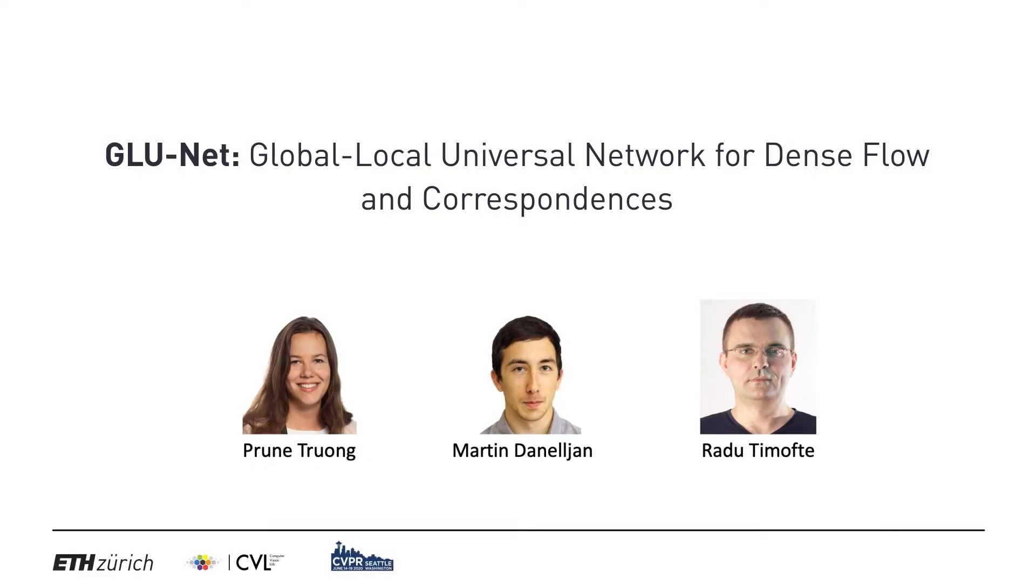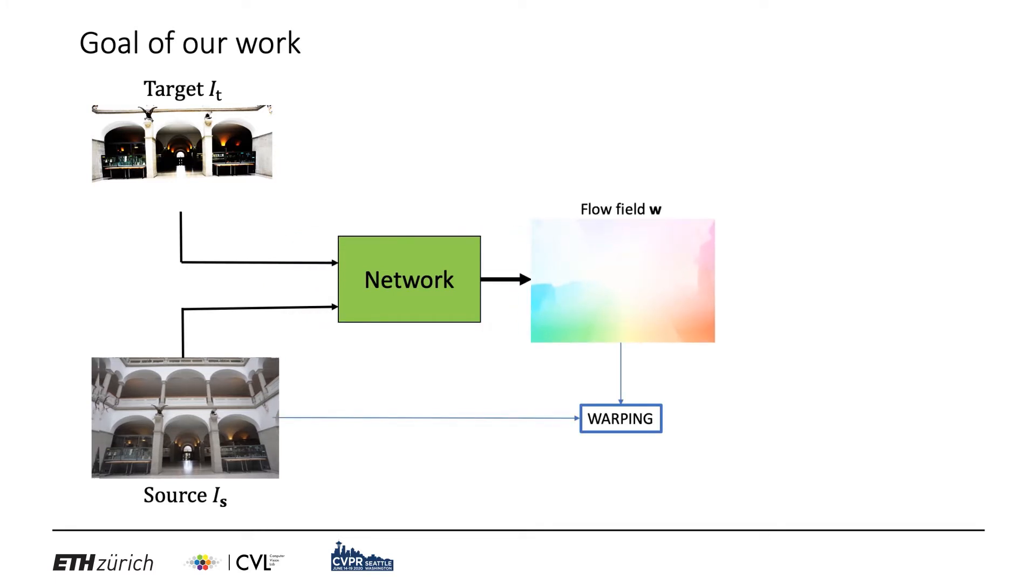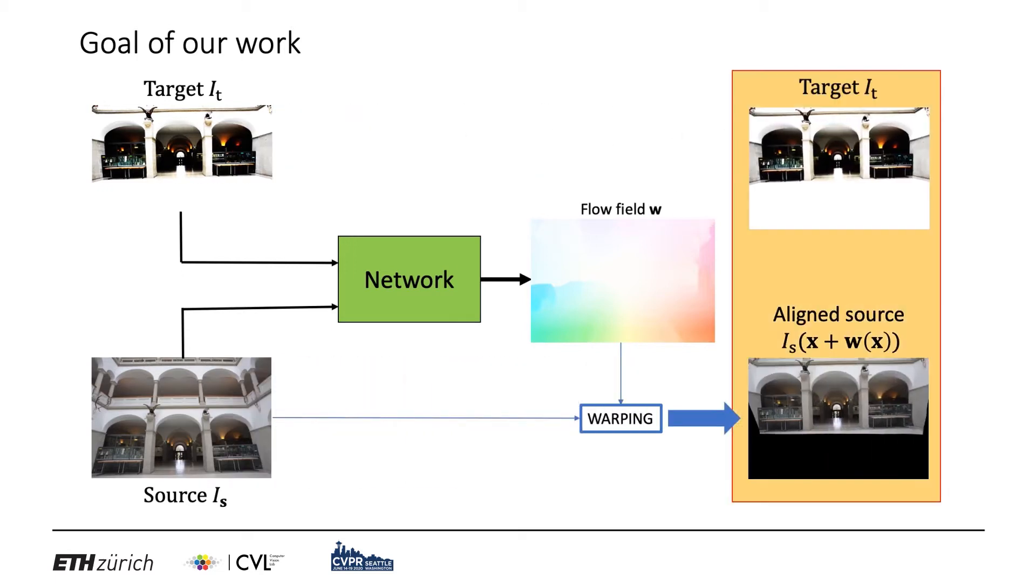This is GLU-NET, Global Local Universal Network for Dense Flowing Correspondences. We address the challenge of dense pixel-wise correspondence estimation for pairs of images. Given a source and target image, our network takes both as input and outputs a 2D flow field that aligns the source image with the target.